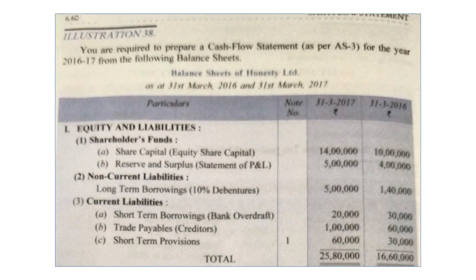In short-term provisions, we generally take taxation. In this question, provision for taxation is rupees 30,000 then rupees 60,000. Current year taxation will be added in NPBT, and previous year tax will be paid. Both these items, being provision for taxation, will be dealt with in cash flows from operating activities.